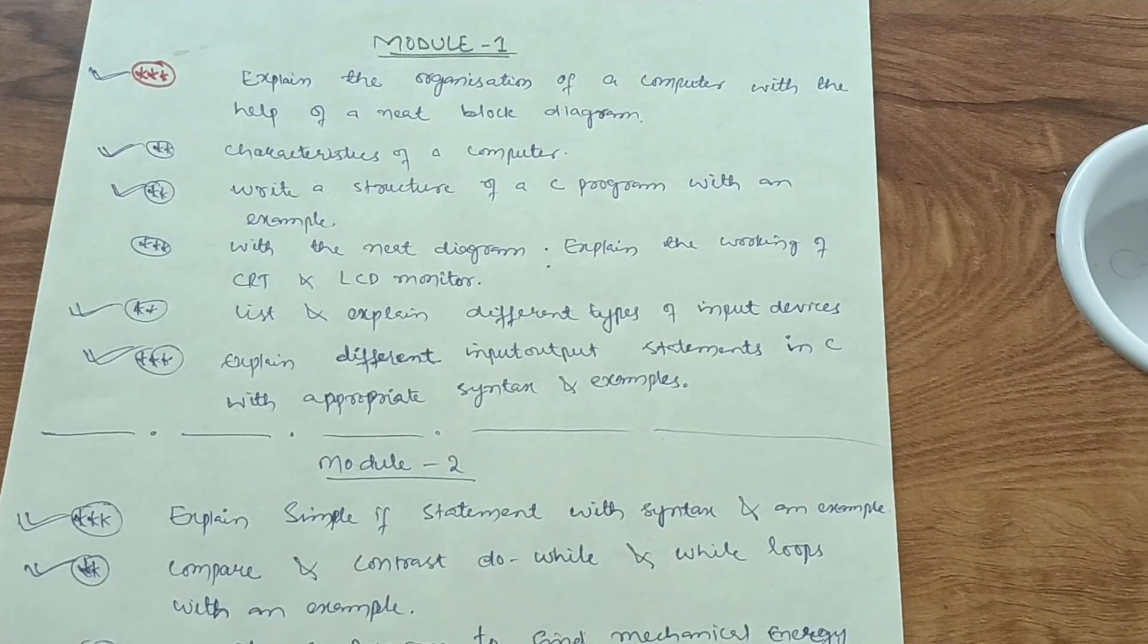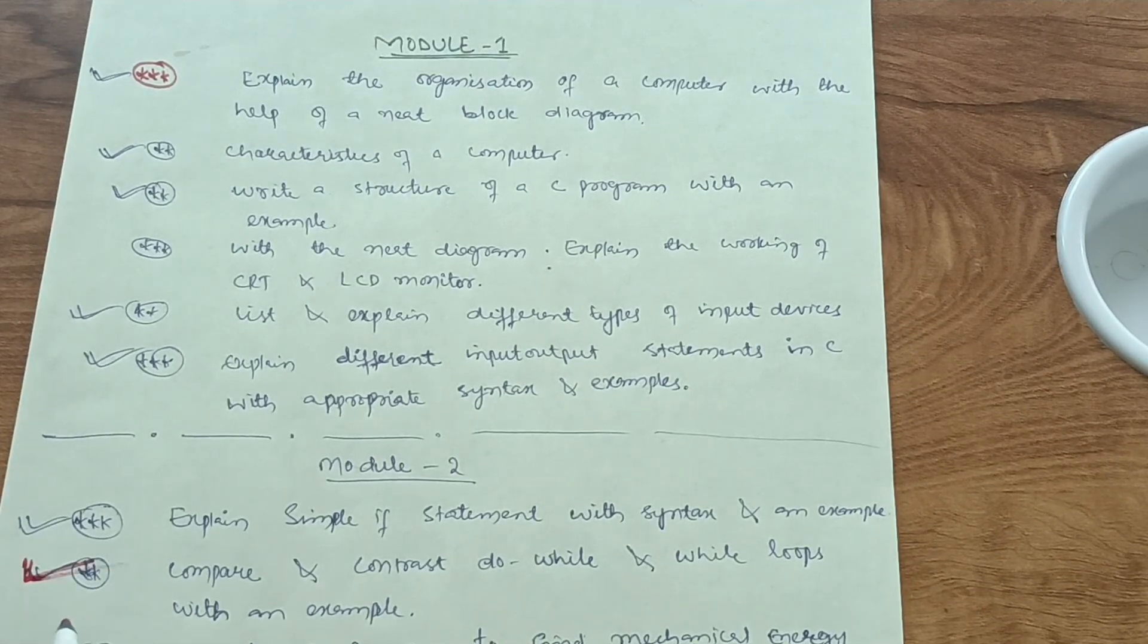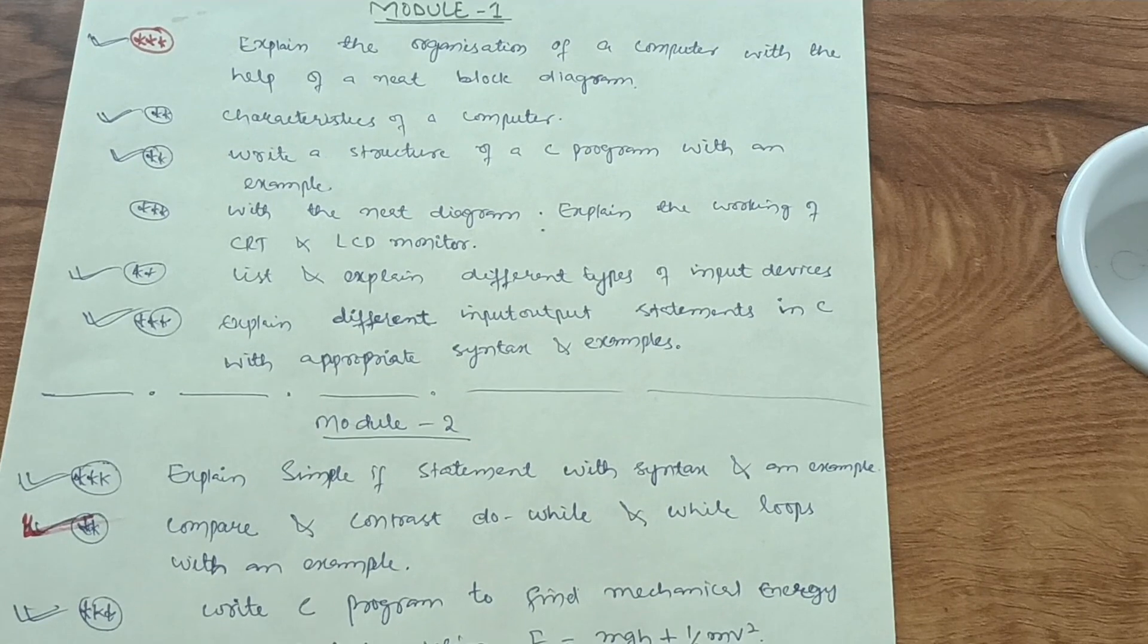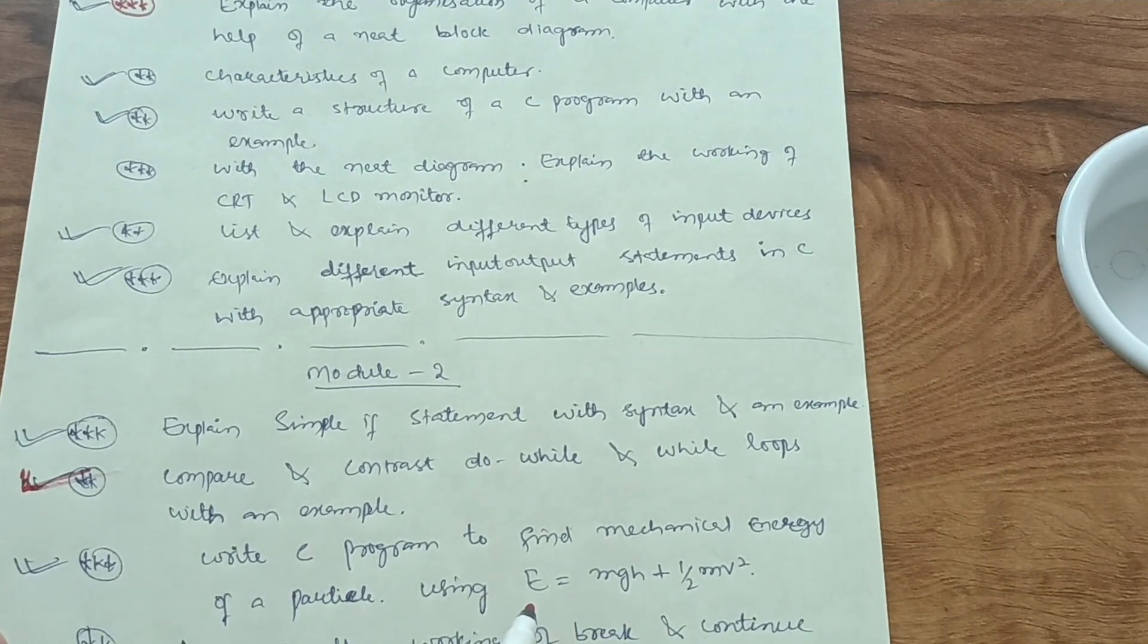It is always asked in the VTU examination if we consider 2018 scheme also. Then write a C program to find mechanical energy of a particle using E = mgh + 1/2 mv². It is the potential energy plus kinetic energy.